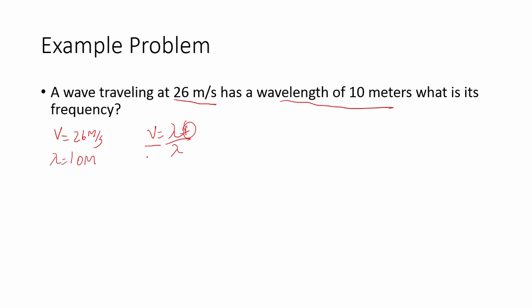To get that, I have to divide both sides by the wavelength. And so, V over lambda equals F. And 26 divided by 10 equals 2.6 hertz. So, that means this wave vibrates 2.6 times per second.